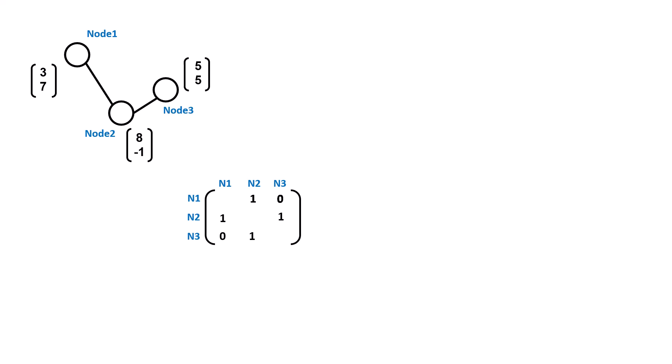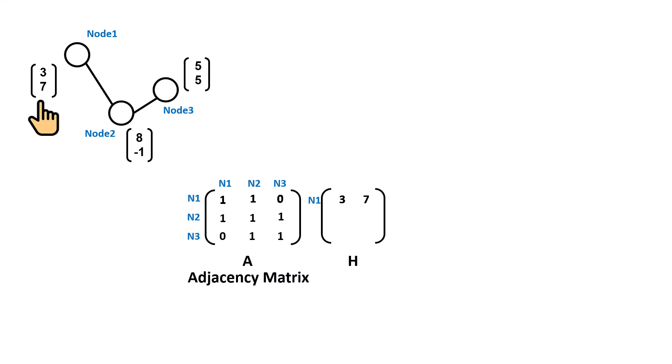For the diagonal entries, since we need to preserve each node's existing information, we add self-loops by setting all diagonal entries to 1. We call this matrix A, the adjacency matrix. Next, we have matrix H, where each row contains the values of a node — the first row is node 1's values (e.g., the vector [3, 7]), the second row is node 2, and the third row is node 3.